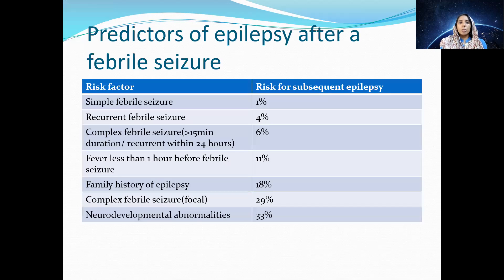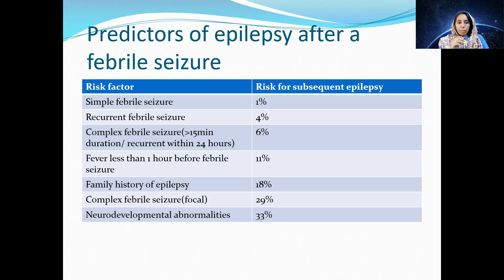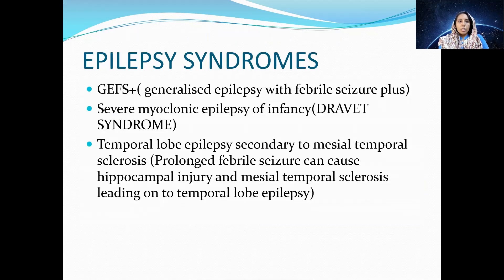Predictors of epilepsy after febrile seizure: simple febrile seizure carries only a 1% risk; recurrent febrile seizure 4%; complex febrile seizure 6%; fever lasting less than one hour before the seizure 11%; family history of epilepsy raises the risk to 18%; complex febrile seizure of focal type 29%; and associated neurodevelopmental abnormalities 33%.